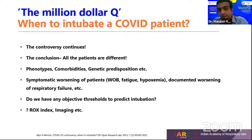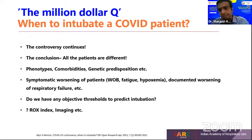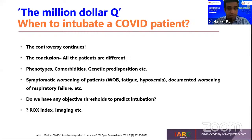Symptomatic worsening of patients is what we are looking for. Work of breathing, fatigue, hypoxemia, and documented worsening of respiratory failure are considered key features when planning for intubation or airway access.